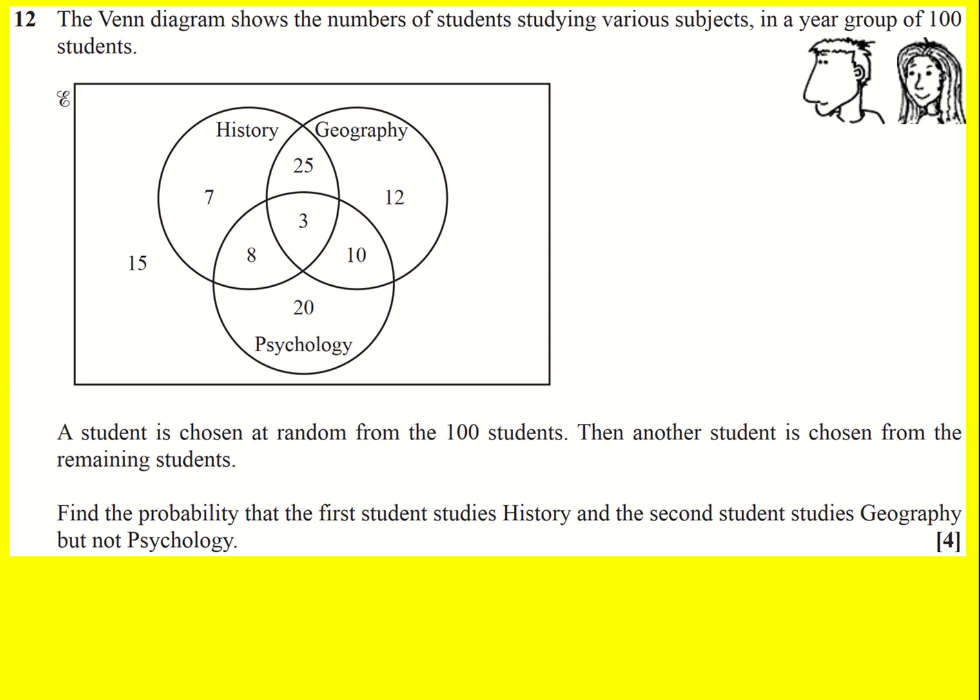Exam technique: essentially, if it's the last question, it's probably slightly unseen. There'll be something you've not seen before when you're doing the A-level paper. And in this case, I think this is it.